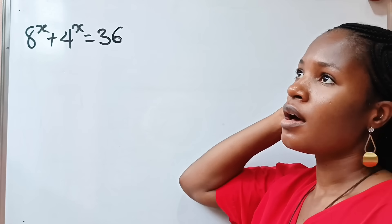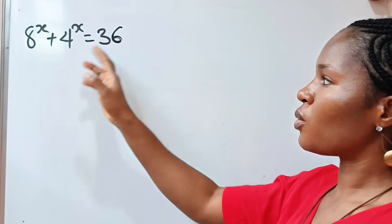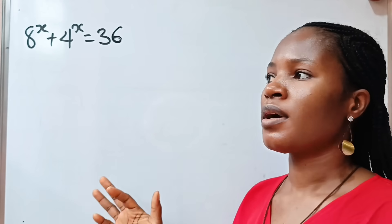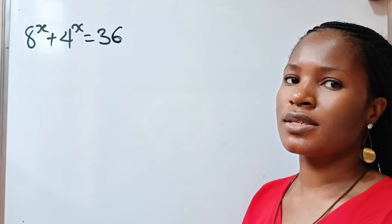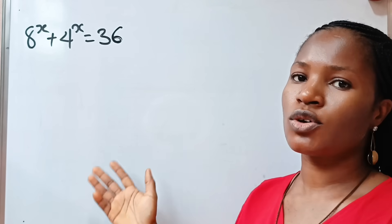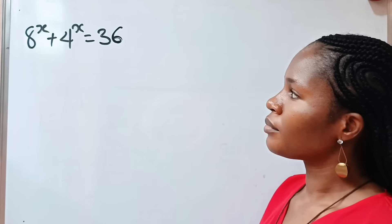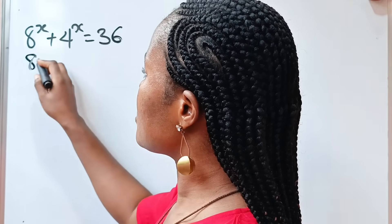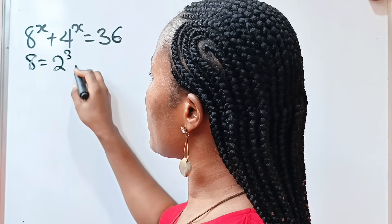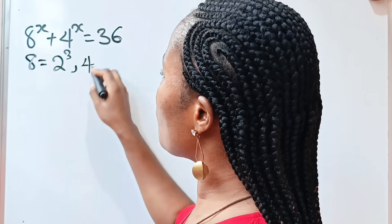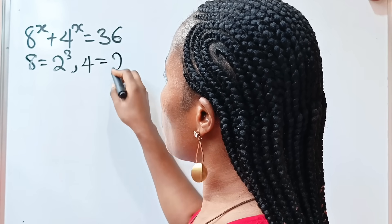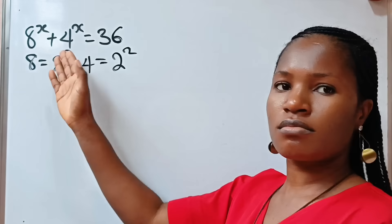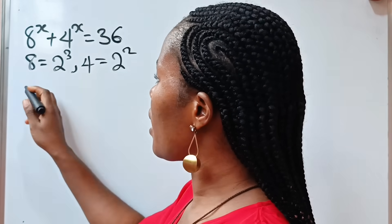So we are asked to solve for x. When you look at this and this, you can see that both of them can be expressed in powers of 2. So 8 is equal to 2 to the power of 3, and 4 is equal to 2 to the power of 2. So let's express them that way.